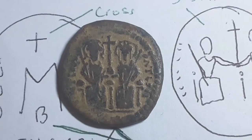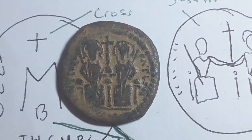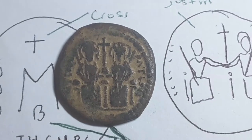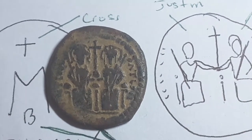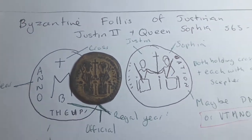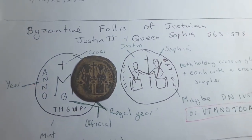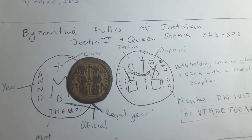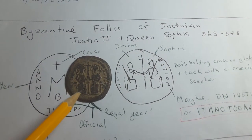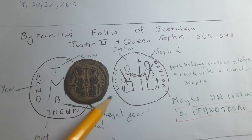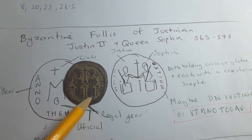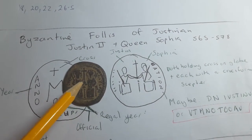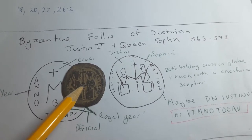This coin is pretty worn, but the detail wasn't really high in the first place. On this side we have Justin the Second, and his wife Sophia. Here we have a cross on top of a globe.